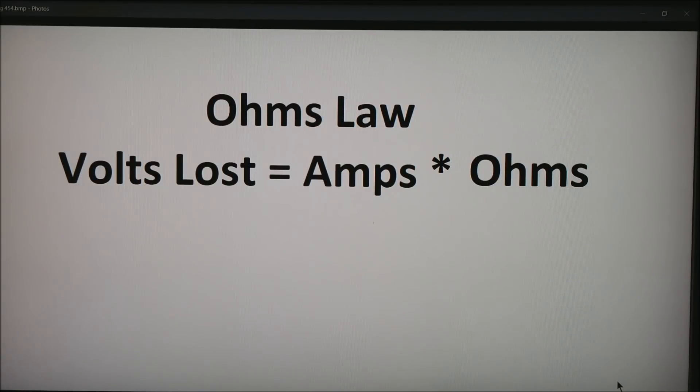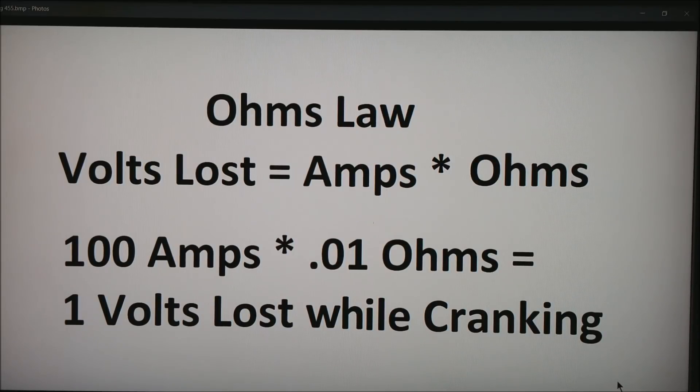So now let's talk about Ohm's law. Basically what it says is volts lost equals the amps times the ohms in the wire that you're using. So if we happen to be cranking against a high compression motor, you might be getting 100 amps through those wires, times 0.01 ohms, which is almost unmeasurable on most ohmmeters. And you'll end up with about 1 volt lost while cranking. So it's pretty tough to avoid this problem.